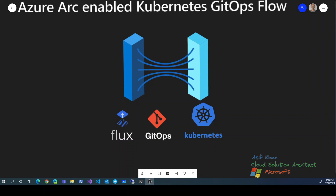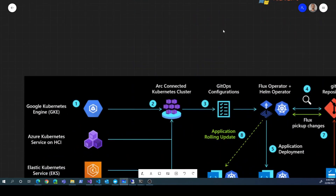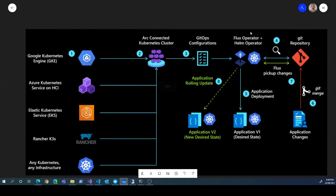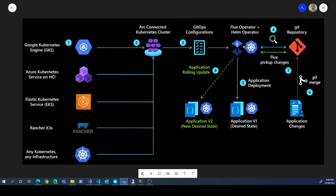Let me quickly walk you through the basic flow of GitOps with Azure Arc. GitOps is not specific to Azure Arc — it's an industry standard with other products running on top of it. What the Azure Arc Kubernetes team did was use the same model to give a better overall 360-degree experience. So you take your cluster, you enable Arc, and you have the management plane inside Azure. For application lifecycle, you can then use GitOps.